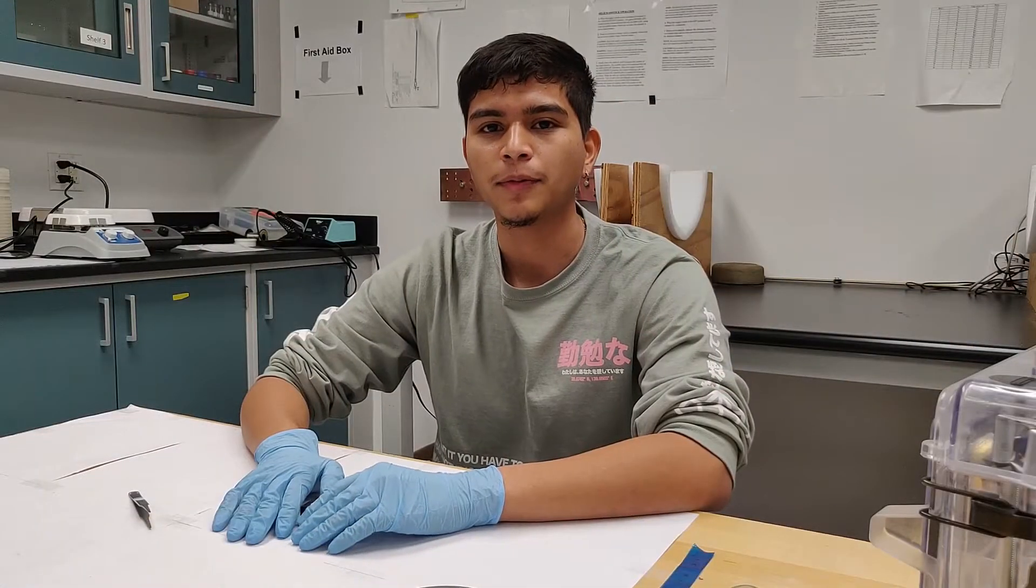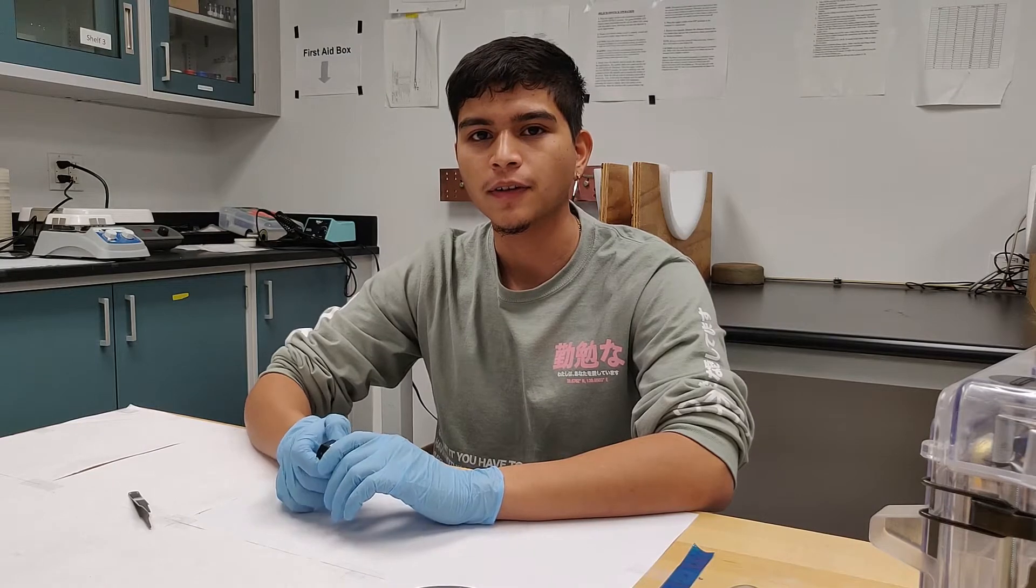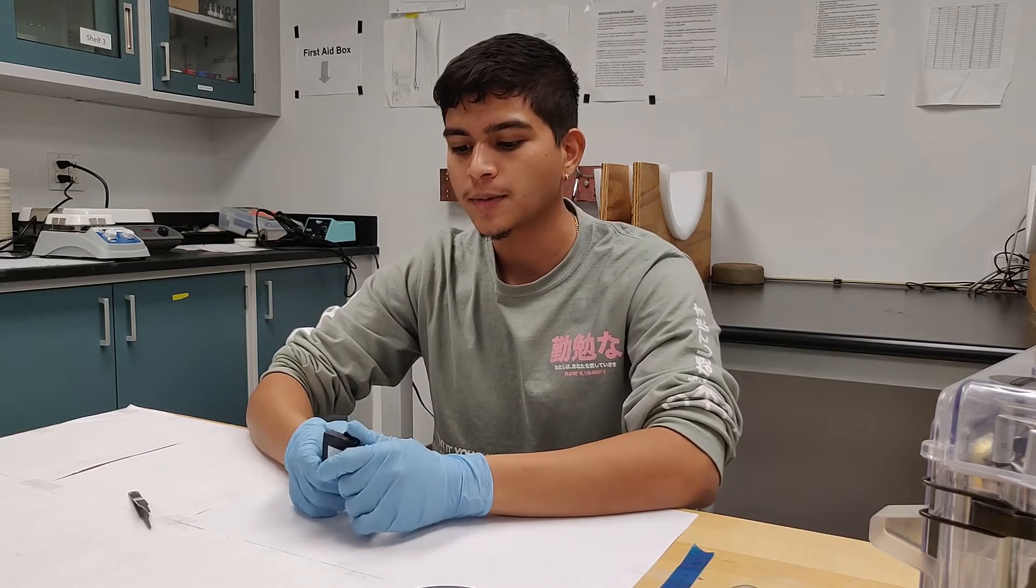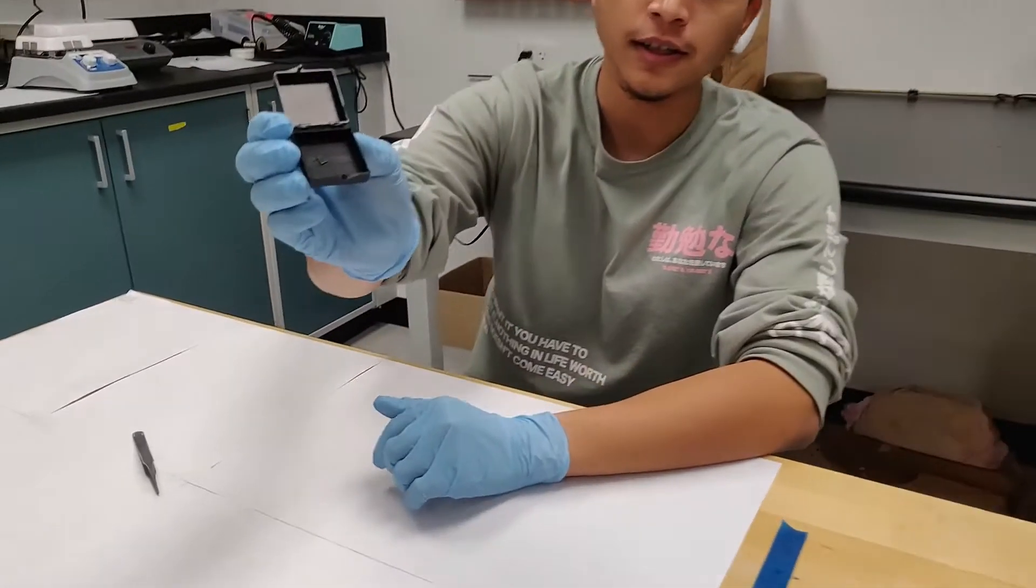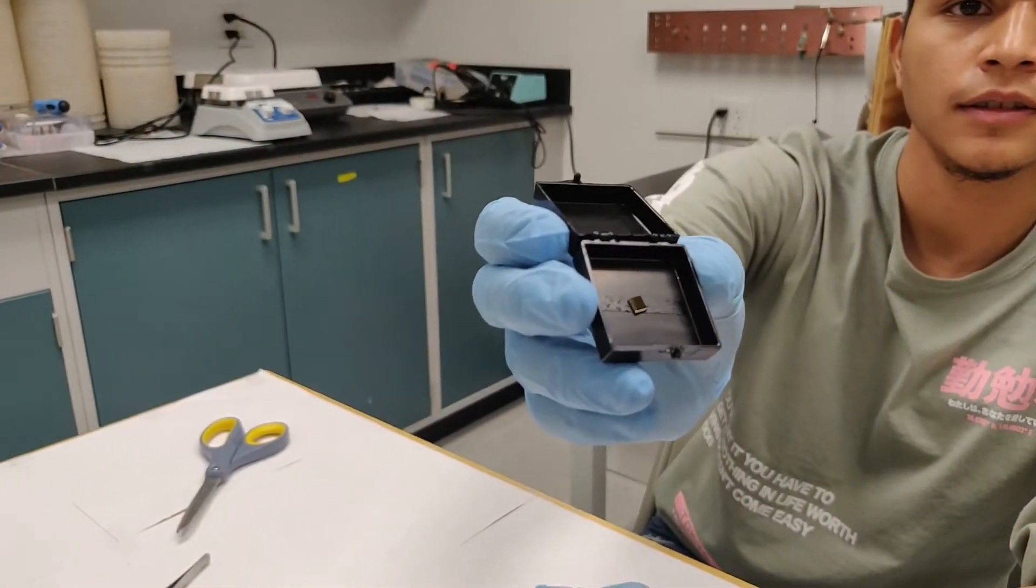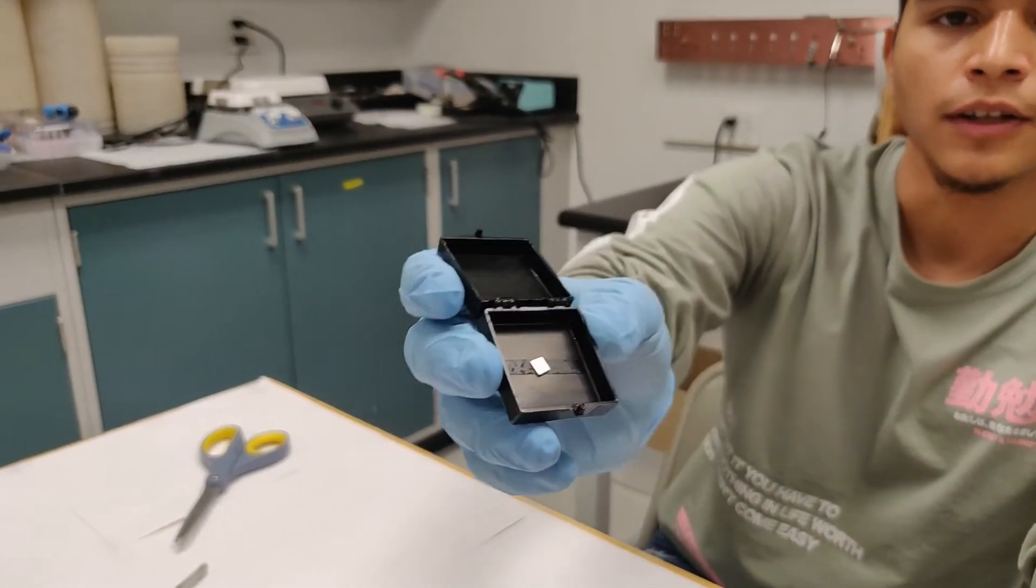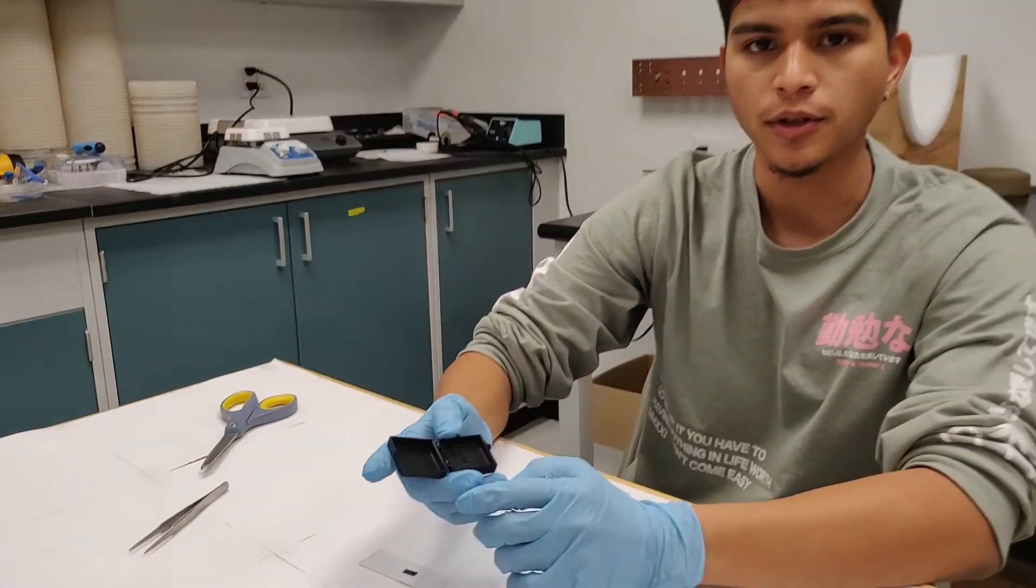Today I'll be performing a mechanical exfoliation using Scotch tape of MOS2. The substrate that I'll be using is silicon dioxide. But this isn't the 2D material we'll be exfoliating, right? No, this is the substrate that will host the 2D material.